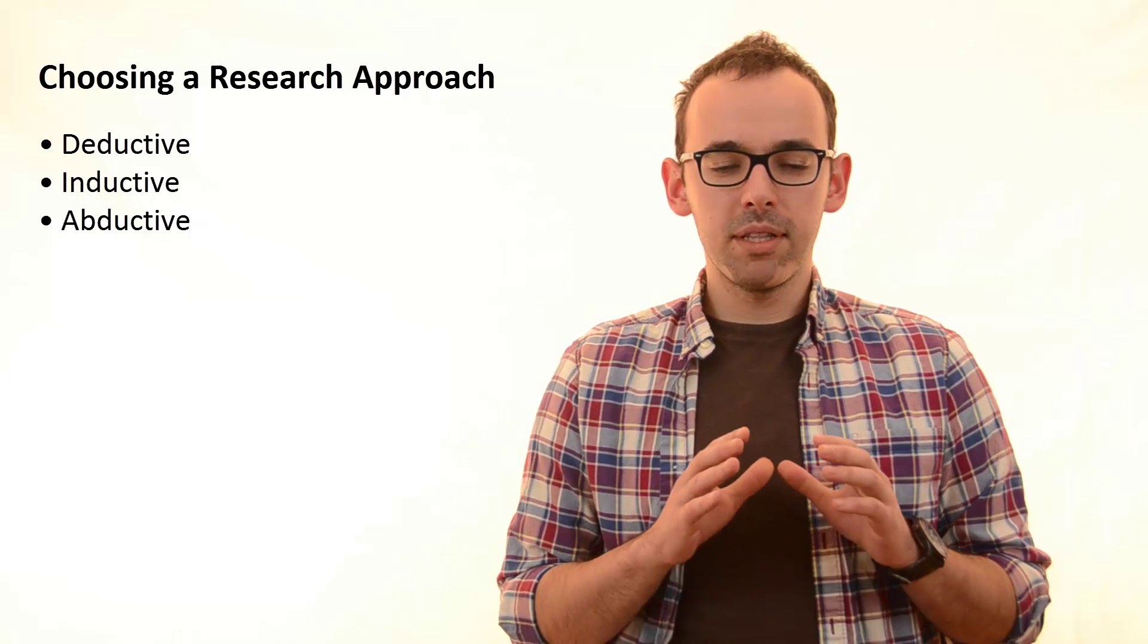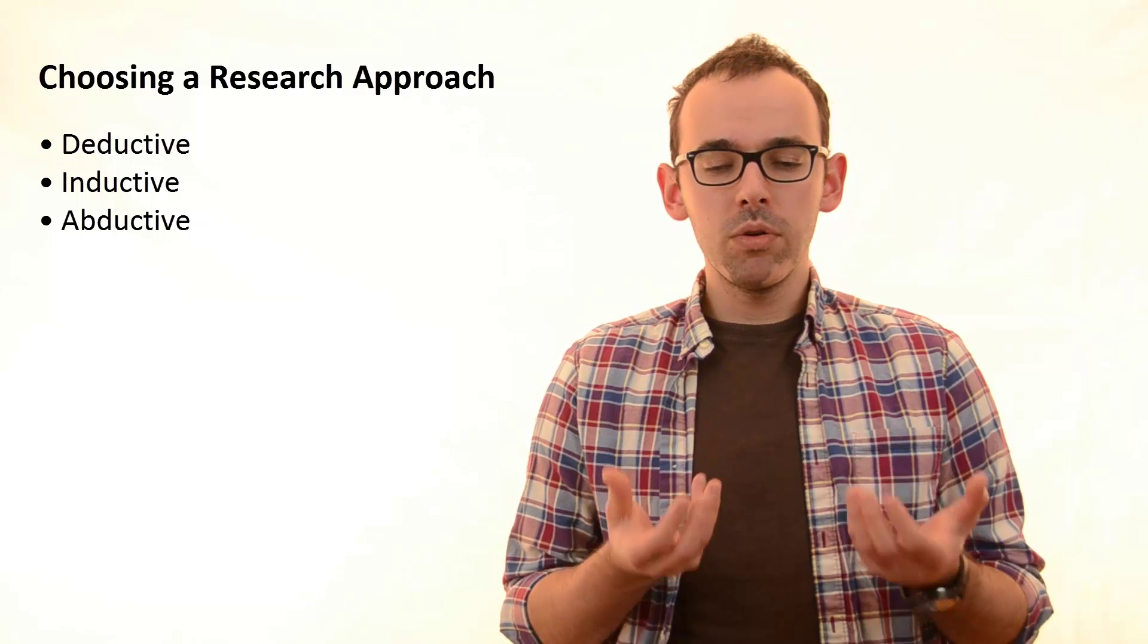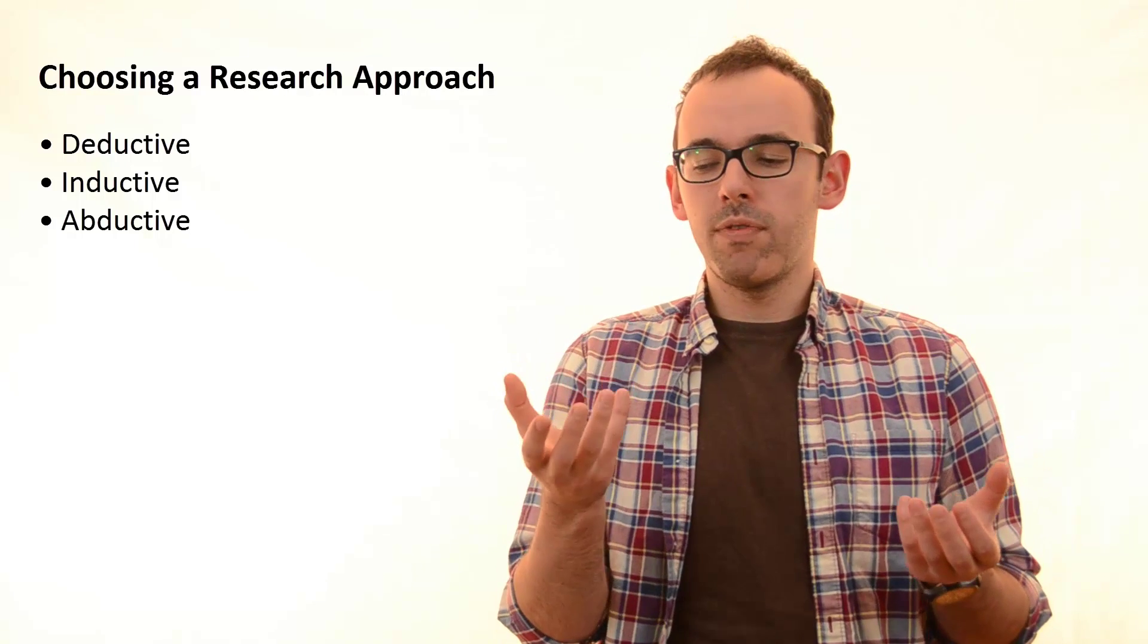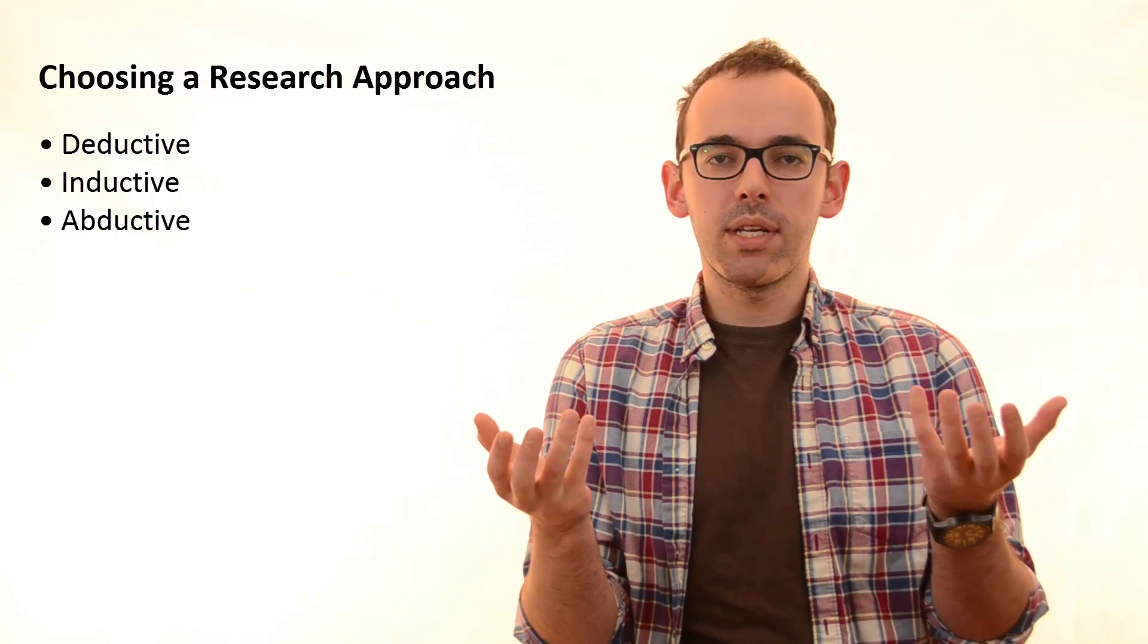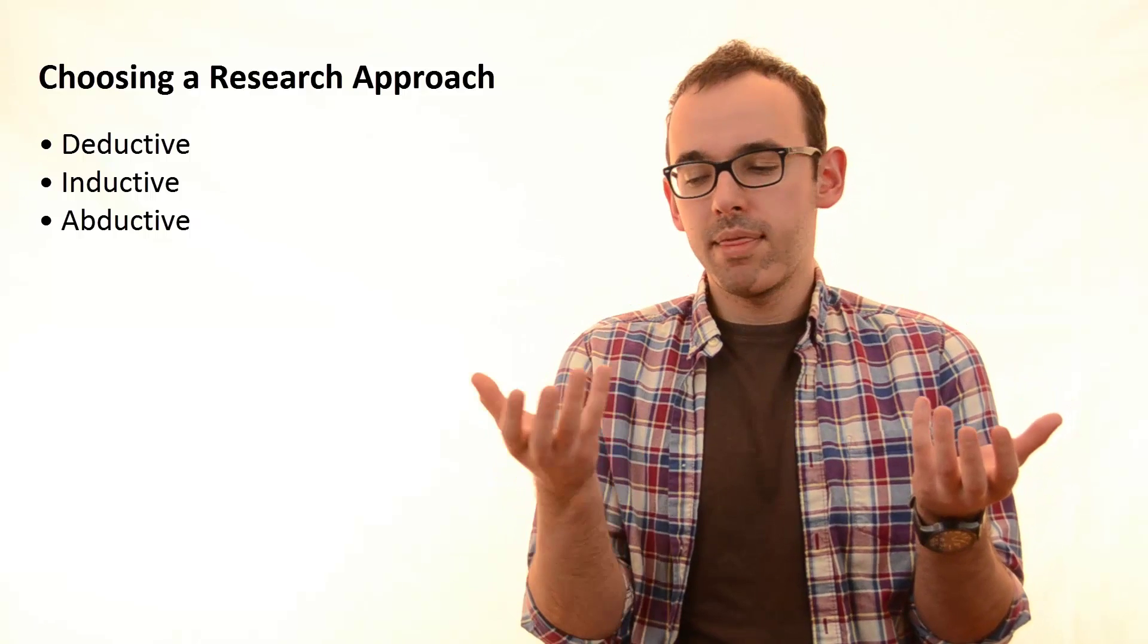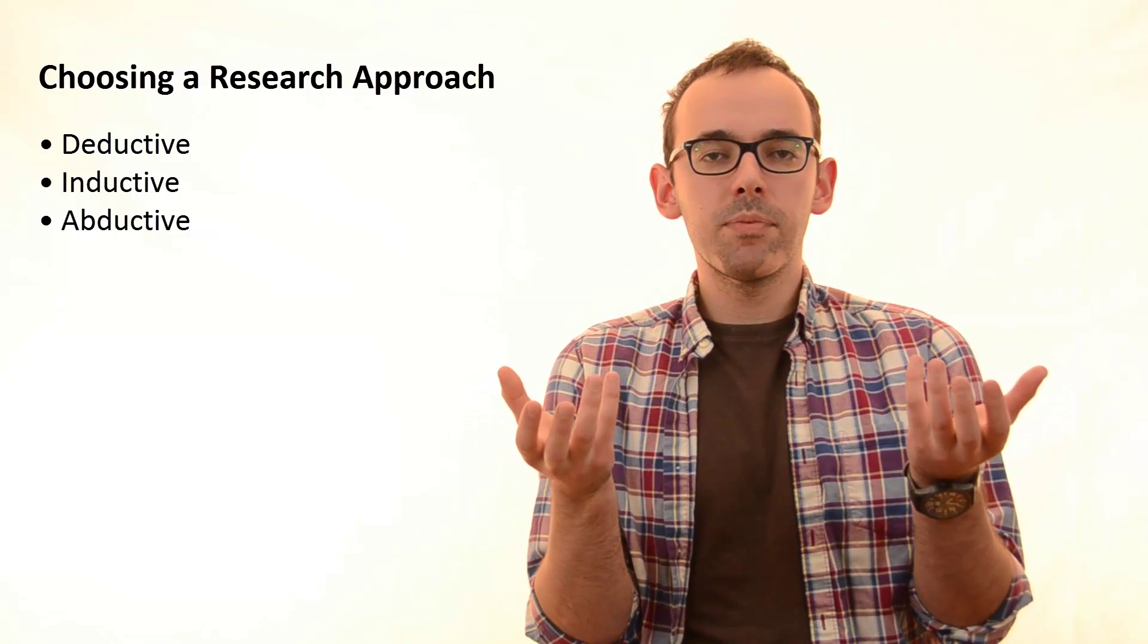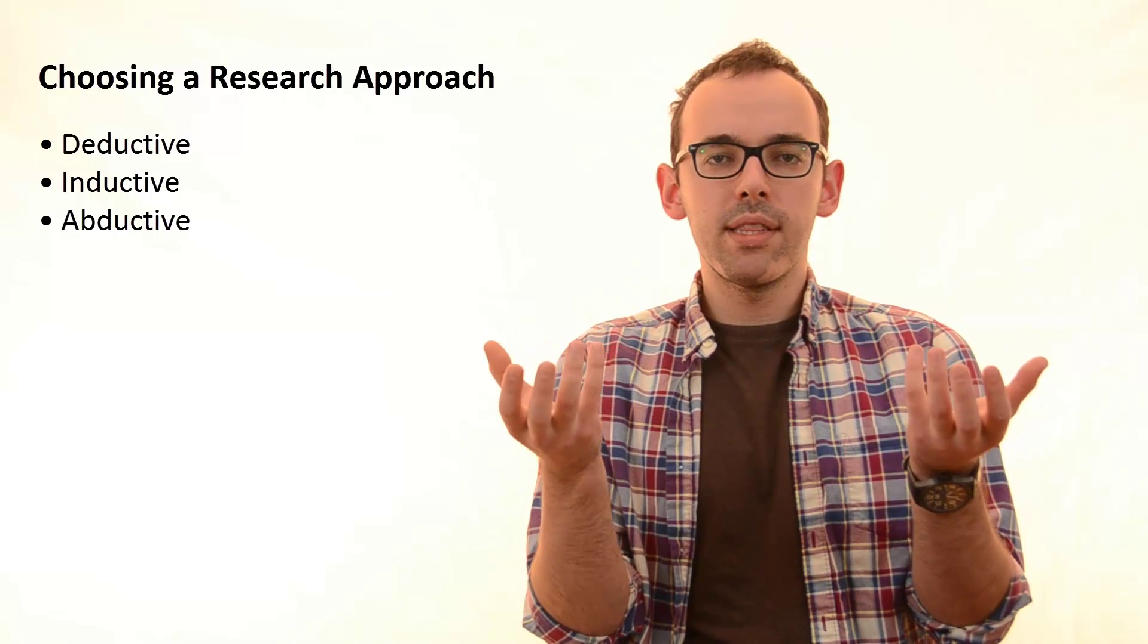And now when you are thinking about these three approaches, the idea is very simple. When you are doing a research, you have two things. You have a data and you have theories. Theories are basically included in your literature review and data is what you will collect. Now these three approaches are telling us basically how are we treating these two entities.